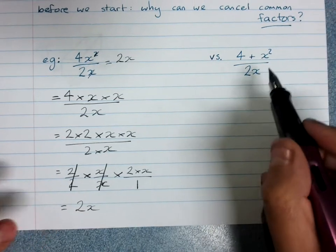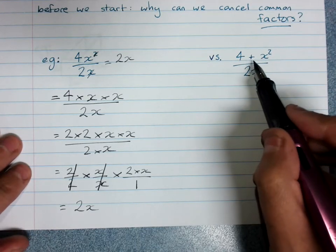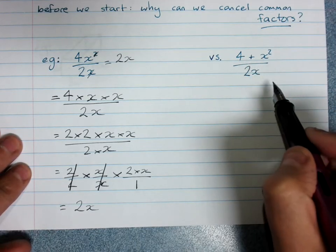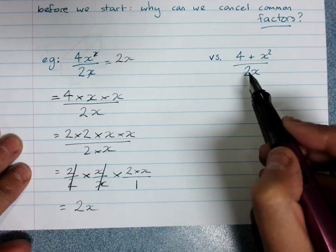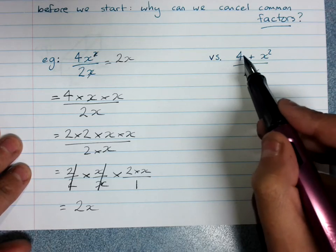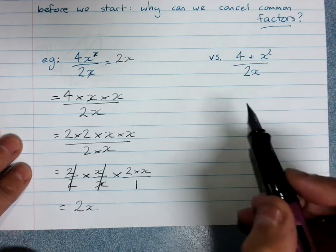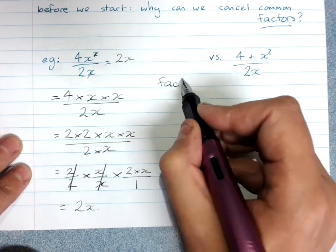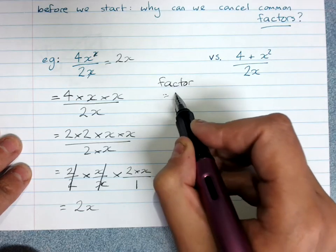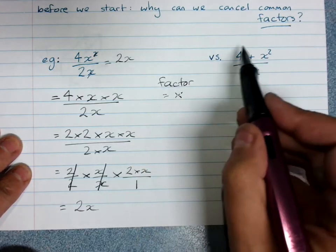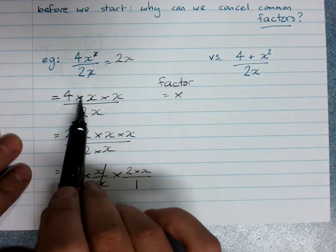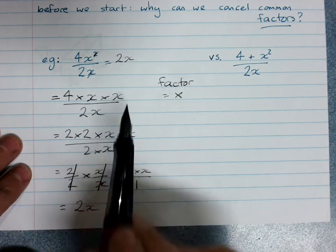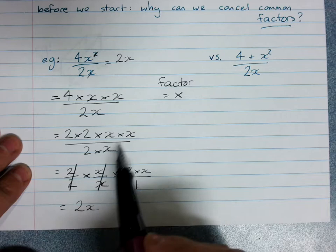We can't go cancelling when they're not factors, but they're added. Now, yes, I can see that there's a 2 here, and I could turn this into 2 times 2, but I need factors. And remember, factor means it multiplies to give me this term. So I need everything up here to be multiplied before I'm allowed to start cancelling.